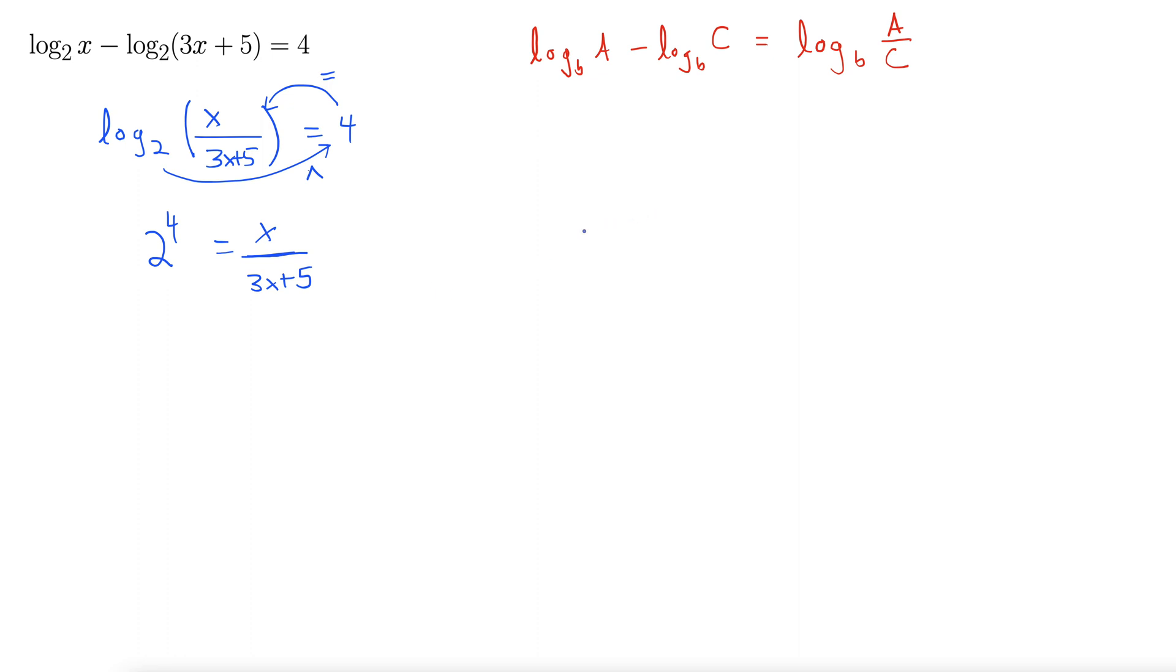We're doing good. Now we need to solve this. 2 to the 4th is 16. So this gives us 16 equals x over 3x plus 5.